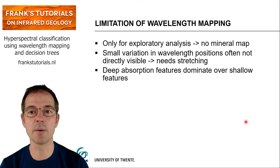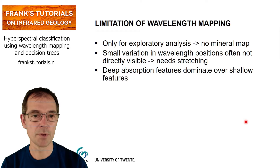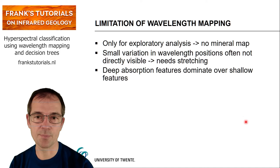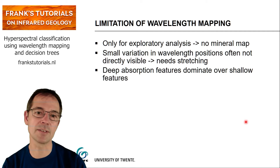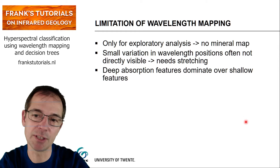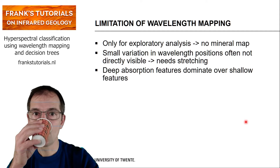There are some limitations to wavelength mapping. It's only for exploratory analysis — you do not end up with a mineral map. You can link a color to a group of minerals, but not to specific minerals, because you're only looking at one absorption feature. Small variations in wavelength positions are often not directly visible without further contrast stretching. And deep absorption features dominate over shallow features, which can be useful but is sometimes not desired.